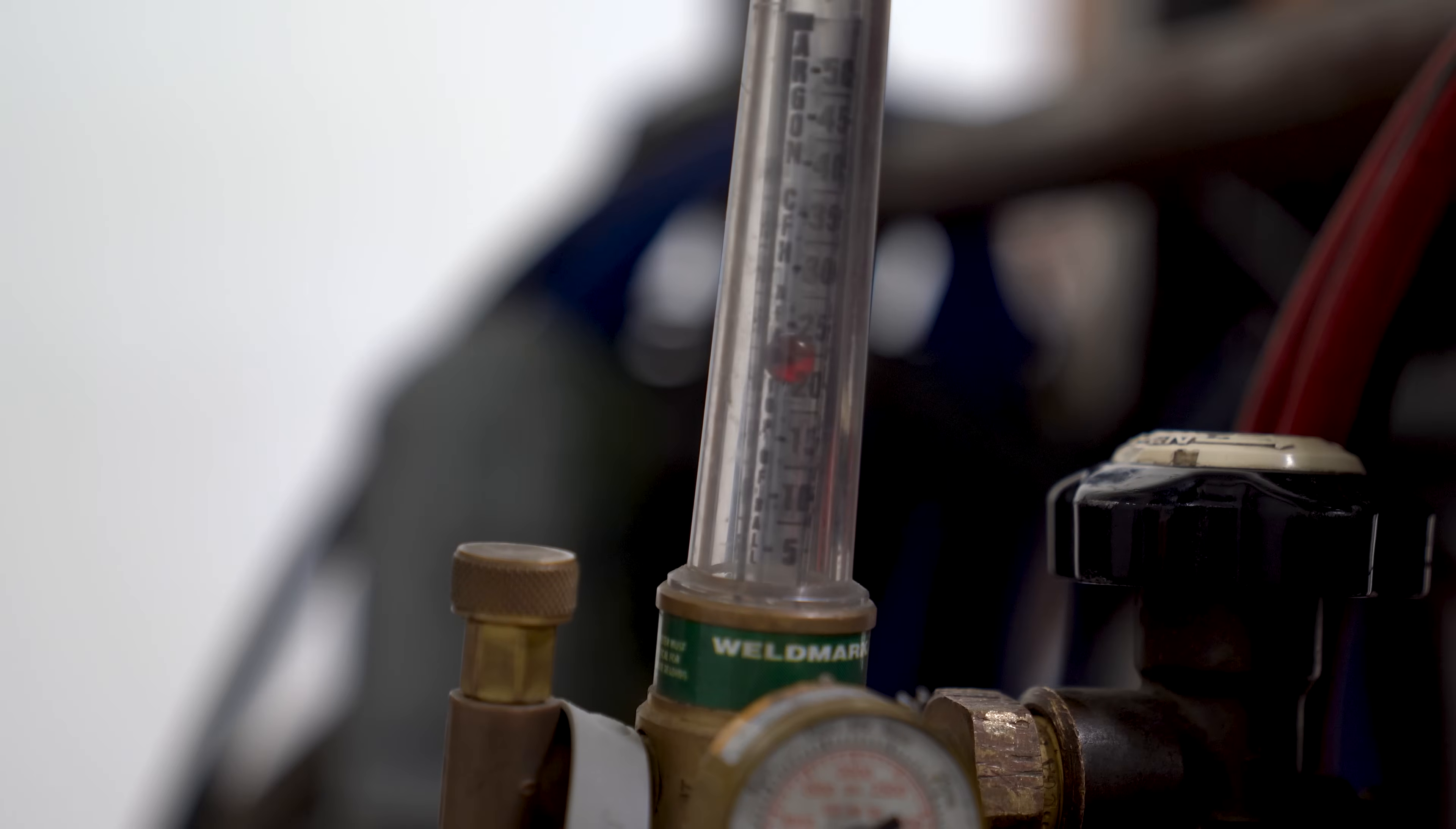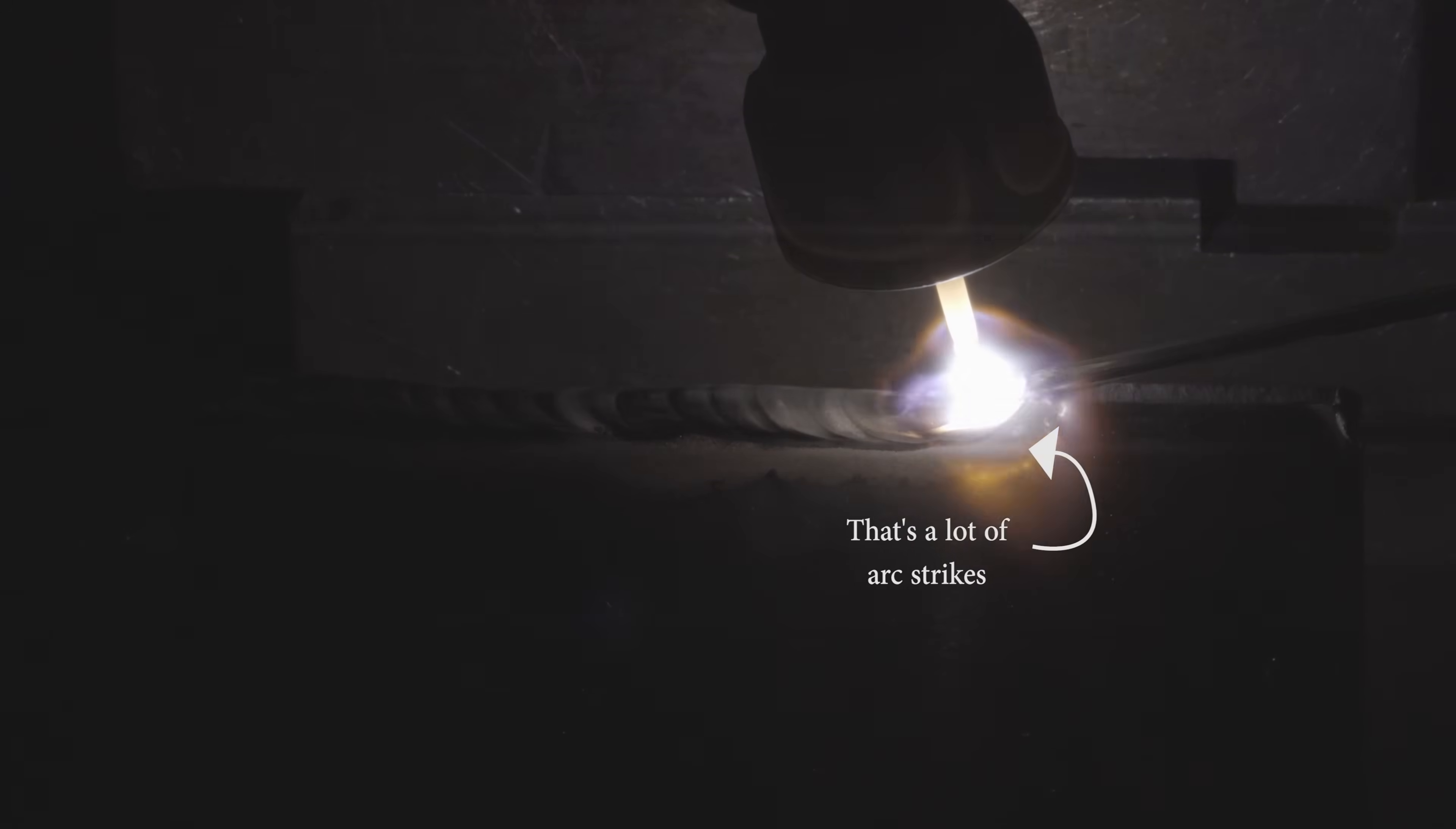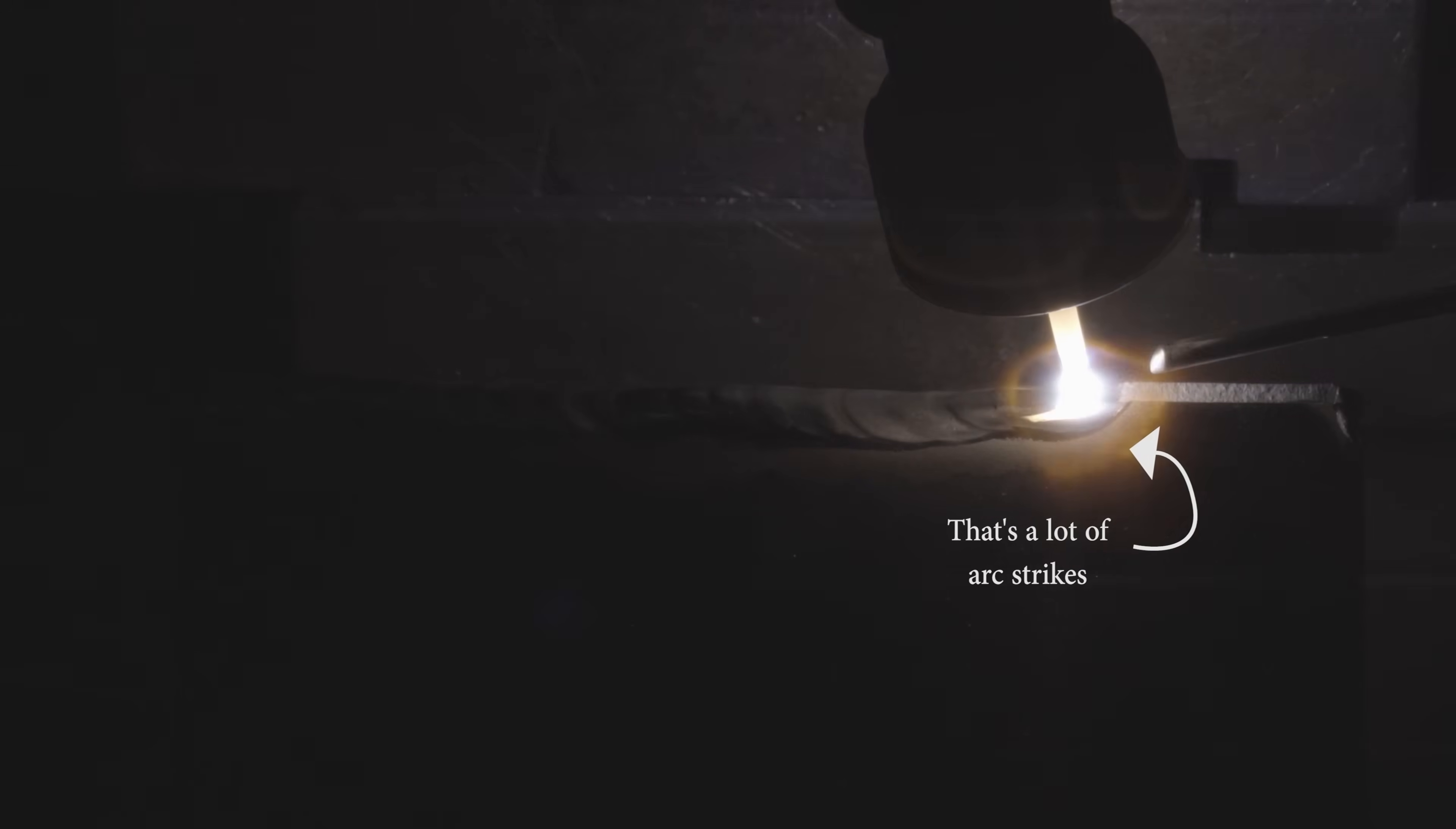That's why if you jack up the flow rate and slap on a larger cup after laying down a crappy weld, it only gets worse. That's also why we don't recommend anything larger than a number 8 gas lens cup on aluminum.